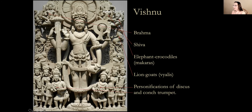Continuing up the sculpture, we have two characteristic composite animal types. One is a lion-goat, clearly delineated here. Here is an elephant that presumably turns into a crocodile — from the back you can see the elephant has the underside of a crocodile. These fantastic composite figures also surround Vishnu, and you see these types in miniature painting as well.